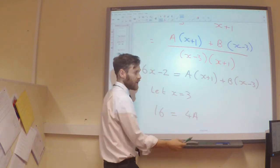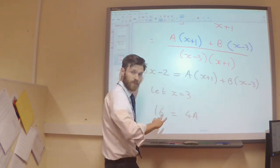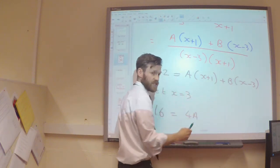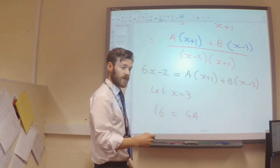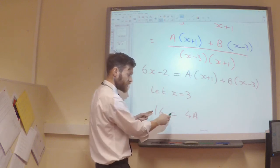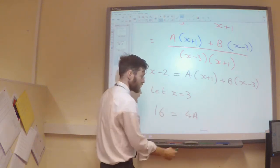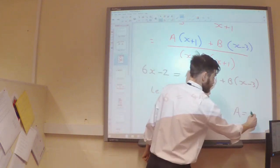And as I said, the B part is going to completely disappear, because when x is 3, 3 minus 3 is 0, B times 0 is 0. So, from this, I can see straight away that A is going to be 4.